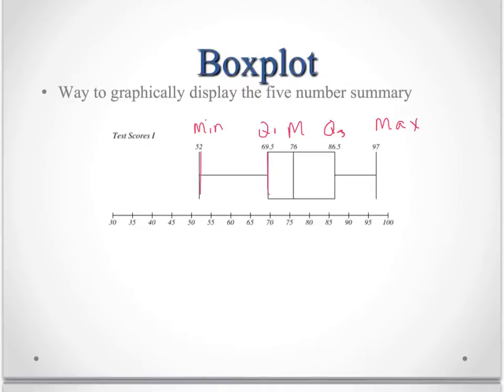So you take each of the five numbers from the five number summary and you draw a line for them. One, two, three, four, five. And then you're going to box in the interquartile range here and draw lines out to the minimum and the maximum.